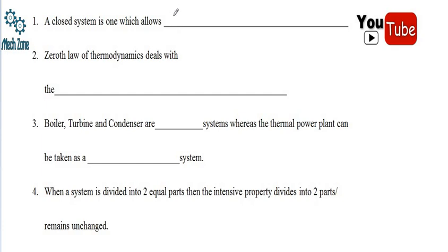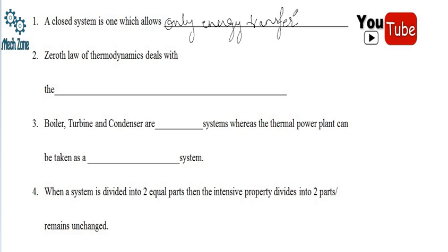The first statement says: a closed system is one which allows — blank. In case of a closed system, there is only the transfer of energy but no transfer of mass. Hence, a closed system is one which allows only energy transfer; there will be no transfer of mass.